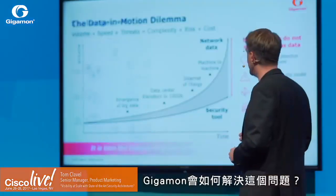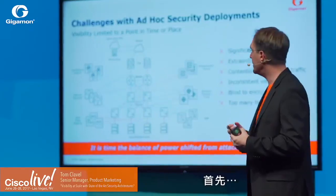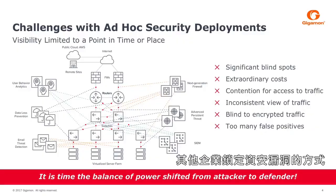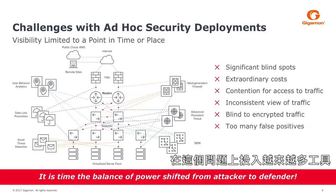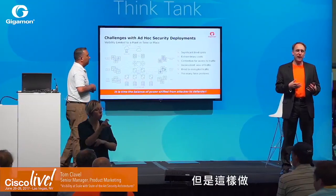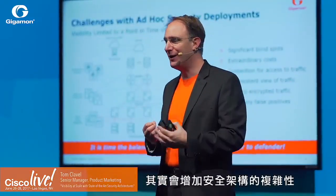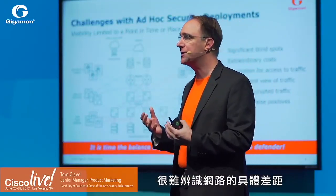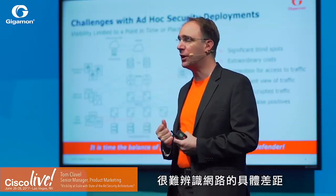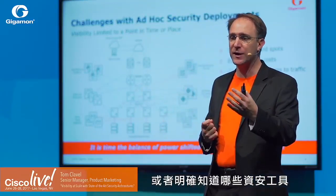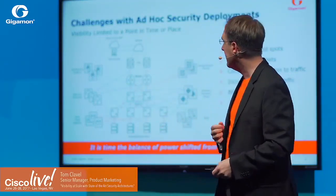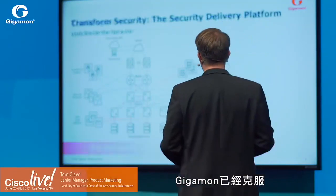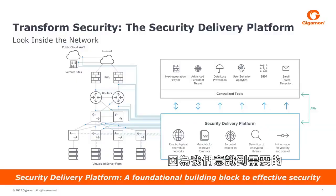So how do we resolve this issue at Gigamon? Enterprises have been trying to target security by deploying more and more tools — throwing more tools at the problem. Whenever you do that, you actually increase the complexity of your security architecture. It becomes very hard to identify specific gaps on your network or to see exactly where your security tools are overlapping each other. That lack of visibility has been overcome with Gigamon, because what we recognize is the need for a security delivery platform.